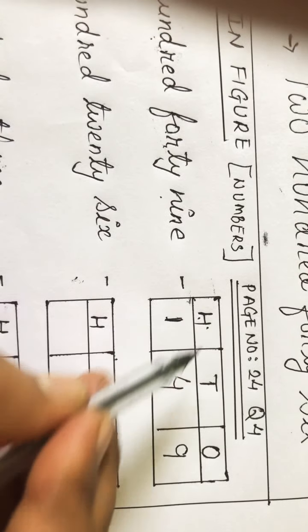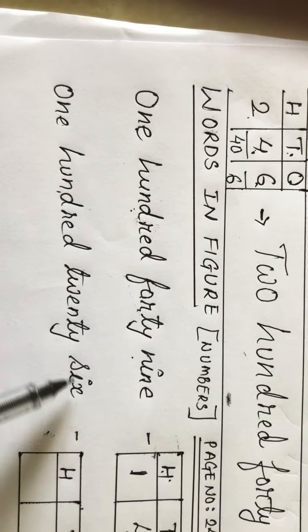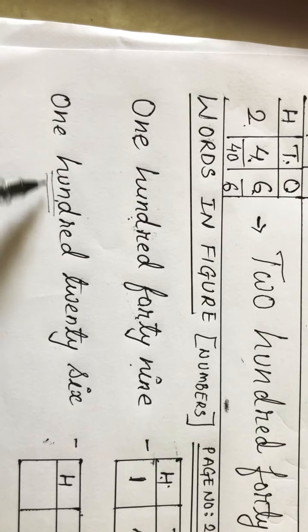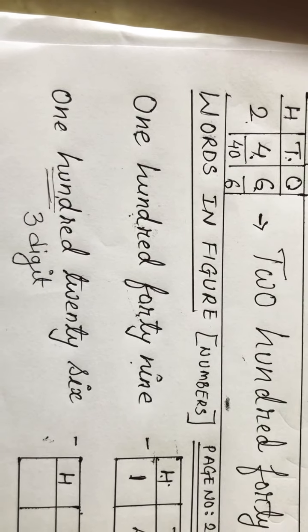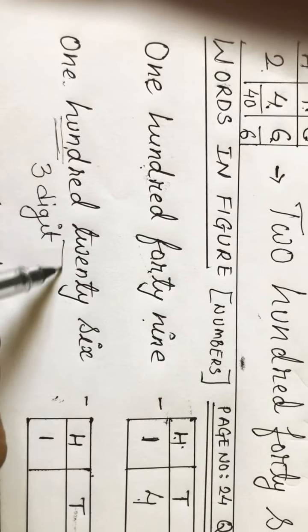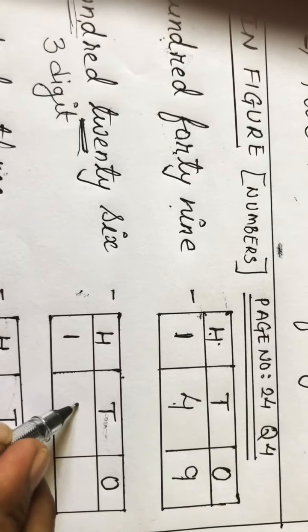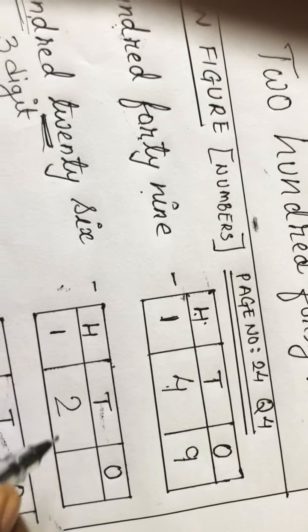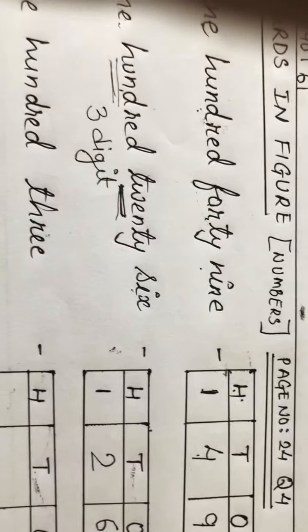Now see the next number: 'one hundred twenty six.' Hundred means there should be three digits in the answer. One hundred — write one at hundreds place. Twenty — it should be at tens place, so write two. And last, six is at ones place. So the answer is 1-2-6, one hundred twenty six.